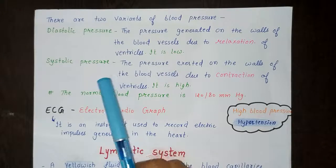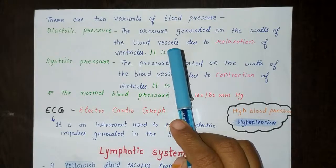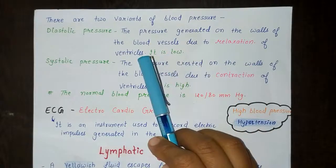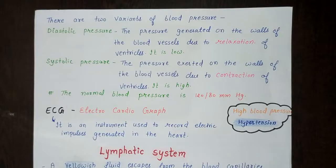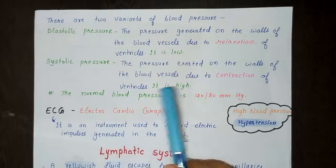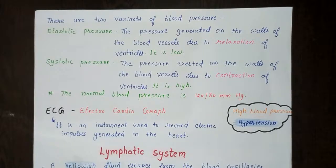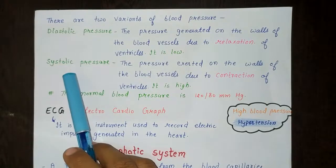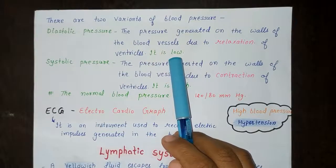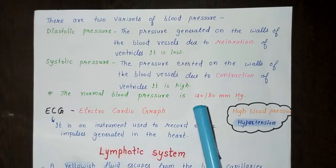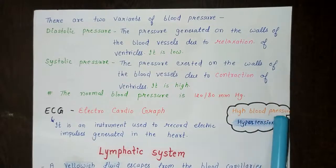Diastolic pressure is the pressure generated on the wall of blood vessels during relaxation of the ventricles. Systolic pressure is generated when the ventricles contract and is higher than diastolic pressure. The normal blood pressure is 120 by 80 mmHg. When blood pressure is high, the condition is called hypertension.